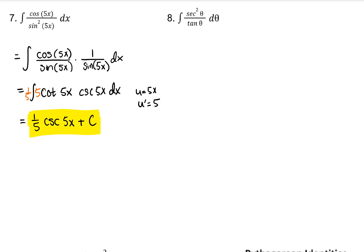If you notice for number 8, our denominator is tangent theta and our numerator is secant squared theta. That's u prime over u. So we get ln absolute value of tangent theta plus c.